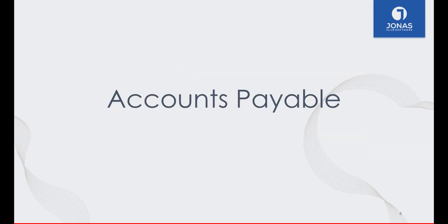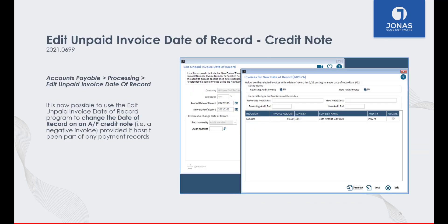Let's start with Accounts Payable. We have updated a few programs to allow you to update certain information for a credit note. It is now possible to use the Edit Unpaid Invoice Date of Record program to change the date of record on an AP credit note — a negative invoice — provided it hasn't been part of any payment records. If it is a negative invoice and has not paid anything off, you can change the date of record.